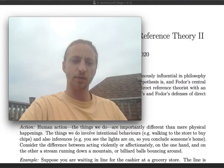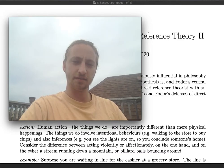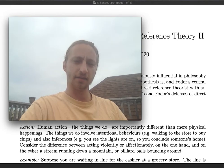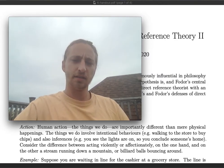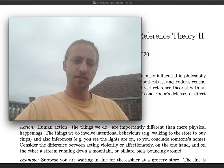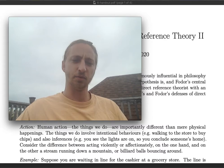Today I will be talking about the second way of defending direct reference theory from the challenge that Frege's puzzles provide. That is, today I'll be giving you another way of making sense of how something other than meaning can explain cognitive value. In this video, I will give an overview of this lecture and give an introduction to the background idea of psychological explanation, which will be important for the ideas in this lecture.